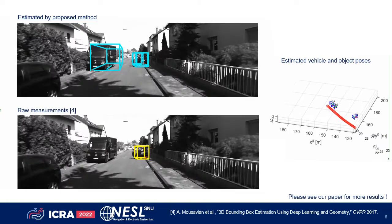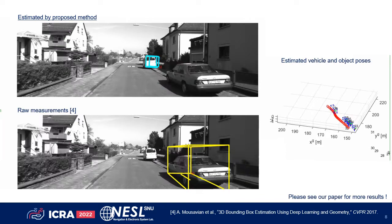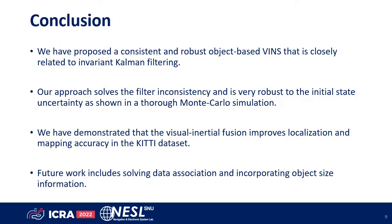Our proposed method outputs global poses of vehicles and objects. Please check our paper for more quantitative results. In conclusion, we have proposed a consistent and robust object-based VINS that is closely related to invariant Kalman filtering. Our approach solves the filtering consistency problem and is very robust to initial state uncertainty. We have demonstrated that visual inertial fusion improves localization and mapping accuracy in the KITTI dataset.